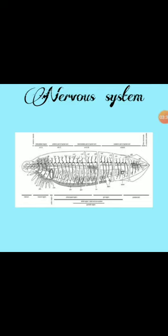The anterior central canal is dilated, and the cerebral vesicle is formed. The dorsal diverticulum is also present. The cerebral vesicle gives out two pairs of cranial nerves, which are supplied to the oral hood, cirri, and sensory organs.